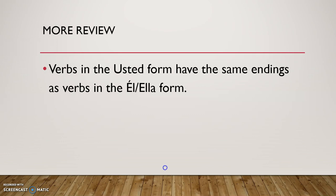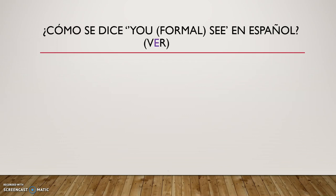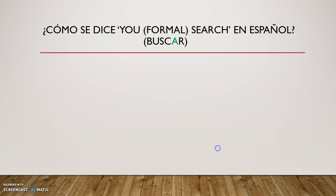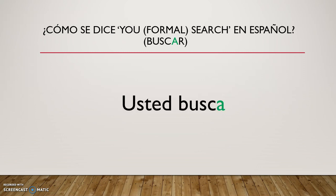Let's do some practice. ¿Cómo se dice 'you see' in a formal way in Spanish? The verb to see is ver. It should be usted ve. Notice there's no S here, even though it means 'you see,' because it's formal. ¿Cómo se dice 'you search' in a formal way in Spanish? The verb is buscar. The answer is usted busca — you search, but in a formal way.